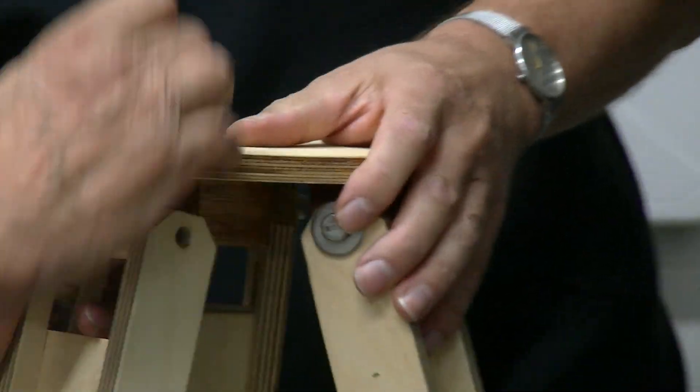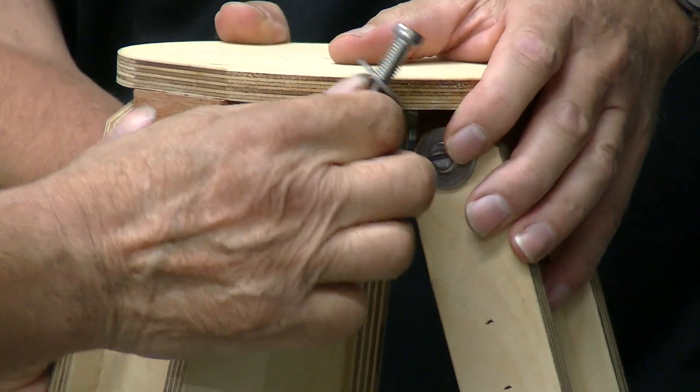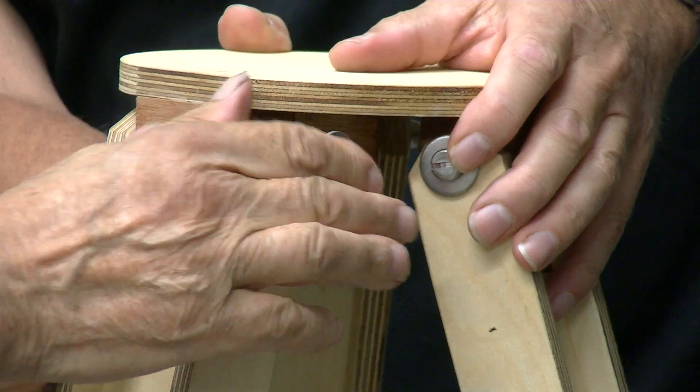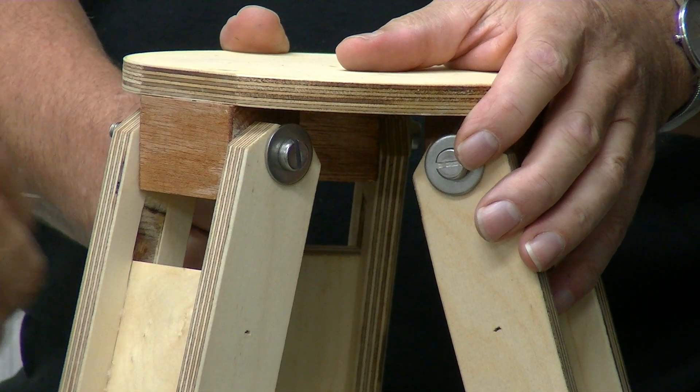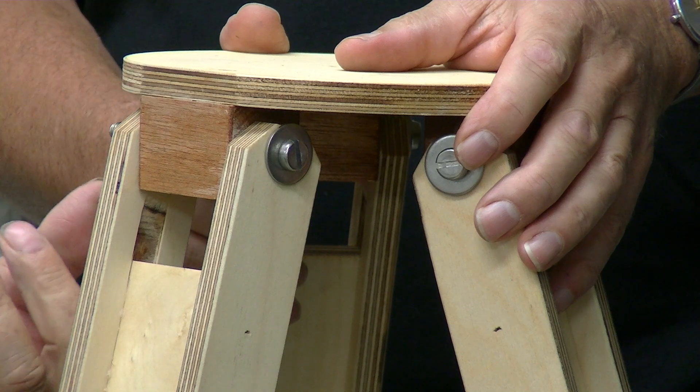You enter the leg over the wooden block, put the bolt through it. First you put the washer and then the nut.